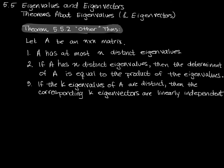Number three says that if the k eigenvalues of A are all distinct — there might be n of them, or fewer — then the eigenvectors associated with each of those eigenvalues will be linearly independent. If A is an n by n matrix, we already know A has at most n distinct eigenvalues, but there might be fewer. So if there are k eigenvalues and they're all different, then the k corresponding eigenvectors will be linearly independent.